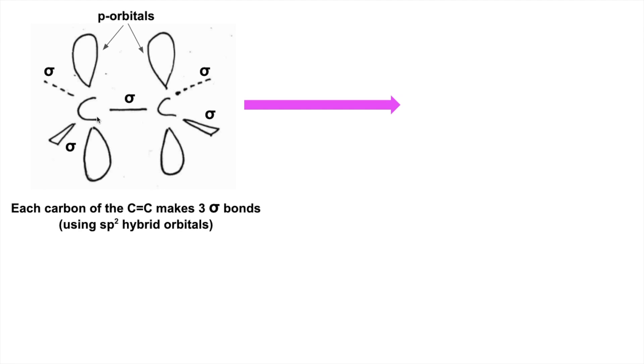In the case of the carbon-carbon double bond, these orbitals are called sp² hybrid orbitals. Hybridization isn't on the OCR specification, but I have made a separate video that explains what's going on there. But for the purpose of this video, each carbon atom makes three sigma bonds.